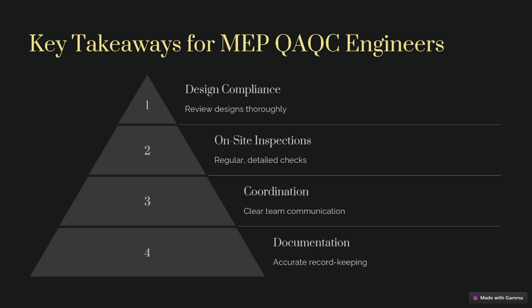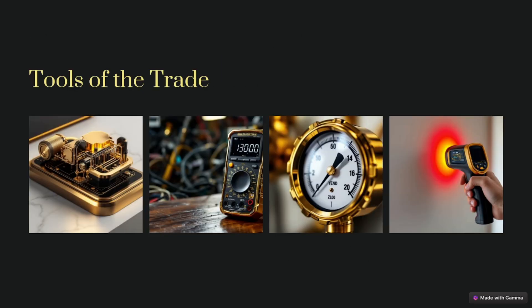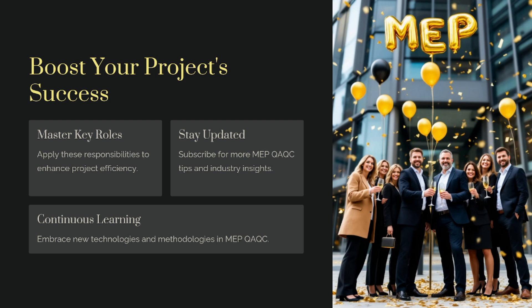Now for the key takeaways: we have design compliance, site inspection, coordination, and documentation — all required for success in your field. Regarding the tools you should have: a measurement tape, gauge reports, and for electrical engineers, a megger machine so you know what tests are being done and what values are coming. You should have these tools whenever you are on site.